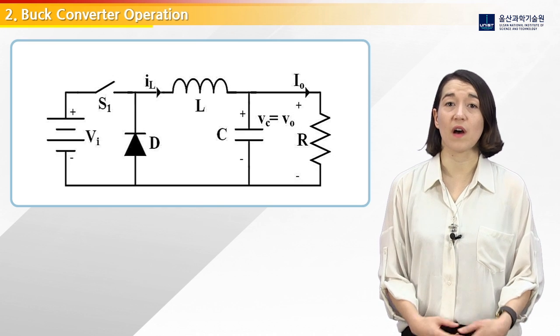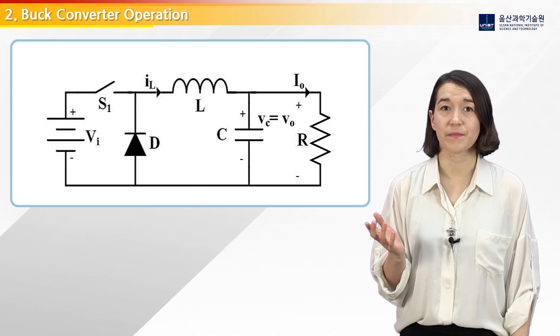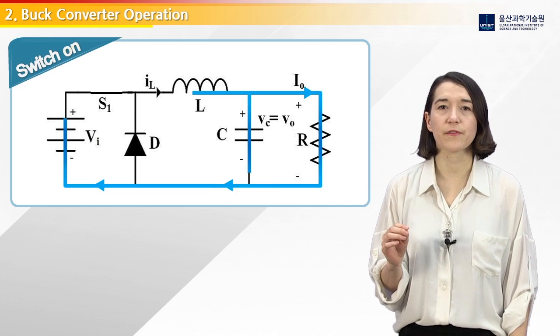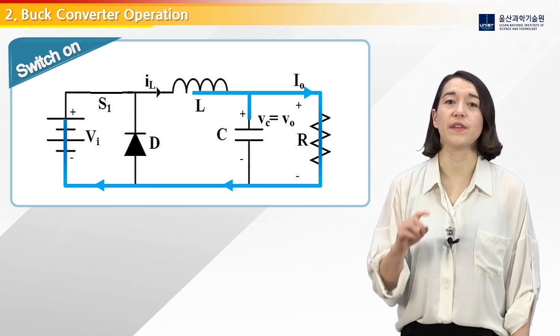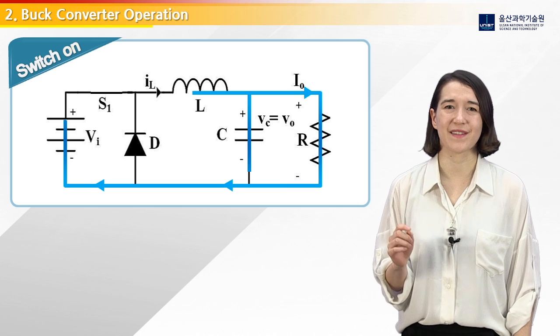When the switch is on, the current flow is as shown here, where power from the input stores energy into the inductor and output capacitor.